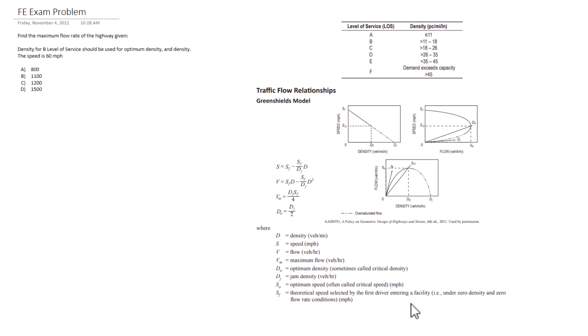Okay, so we've got some information to start here. Let's start working out this problem. What we want to find is the maximum flow rate, and that equals this equation here: the jam density times the theoretical speed selected by the first driver, and that's all over four.